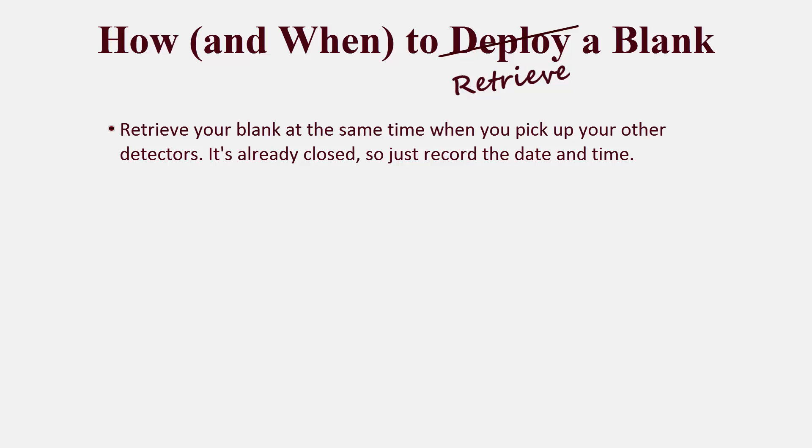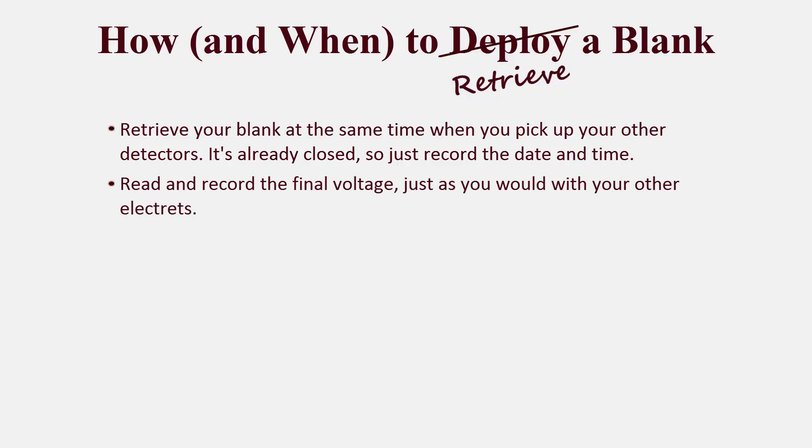You will need to record the end date and time. Once you get back to your office or laboratory, read and record the final voltage, just as you would with your other electrets. Ideally, you'll want to see no voltage drop on your blank, especially for a short-term radon test that only lasted for two days. However, a small amount of latent voltage drop — approximately 1.5 volts a week for short-term electrets and 1 volt a week for long-term electrets — is allowed.